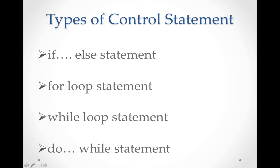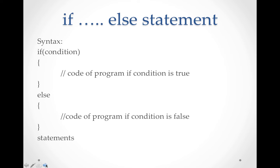The types of control statements we mostly use are: the if-else statement, the for loop statement, the while loop statement, and the do-while statement. We will see each one by one. First is the if-else statement.